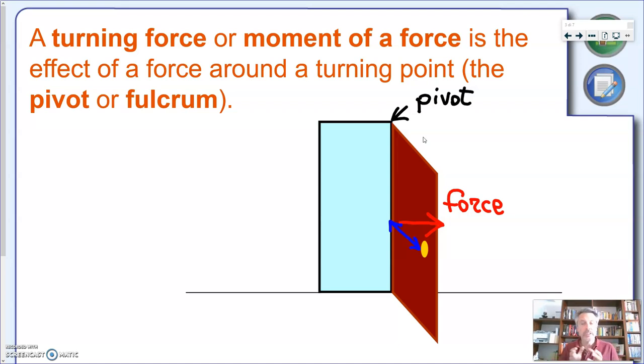So what is important? It's important that we take into account not only the force we're using, but also the distance from the pivot at which we're applying a force. So we're having a combined effect.